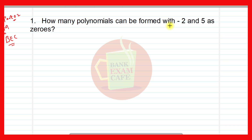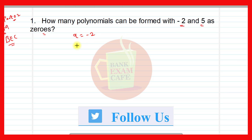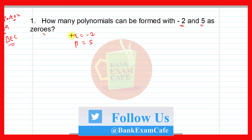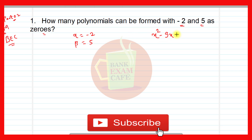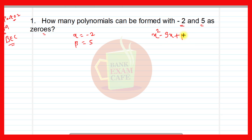How many polynomials can be formed with -2 and 5 as zeros? Here -2 is one zero and 5 is another zero. If we know the zeros of the polynomial, we can write the polynomial as x² - sx + p, where s is the sum of the roots and p is the product of the roots. Sum of the roots: alpha + beta = -2 + 5 = 3. Product of the roots: alpha × beta = -2 × 5 = -10. Therefore the polynomial will be x² - 3x - 10.